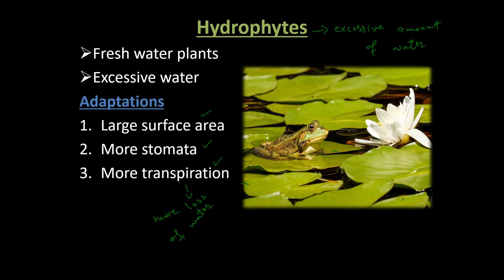Excessive water is released through transpiration via stomata on the leaves. The outer layer, the epidermis, has stomata present in the epidermis layer, allowing water loss and maintaining the plant's water balance.